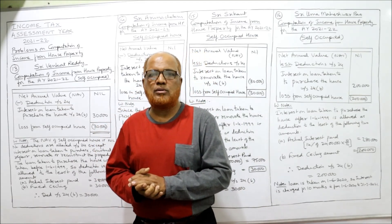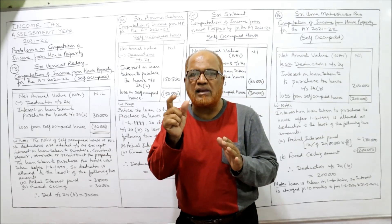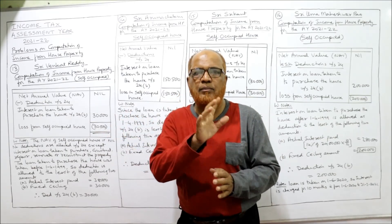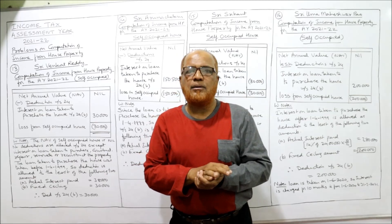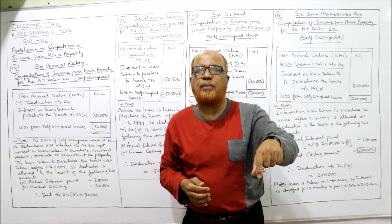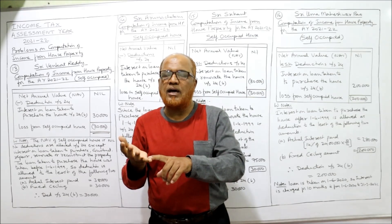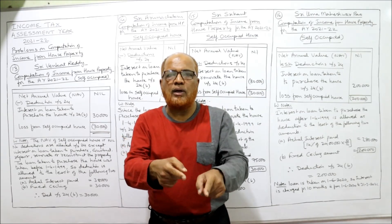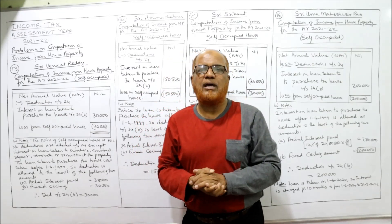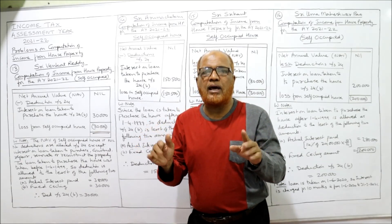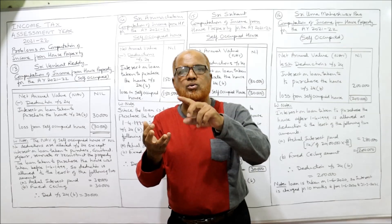This is a self-occupied house. The net annual value (NAV) of a self-occupied house will always be nil. When NAV is nil, we are not concerned about GAV or municipal taxes. So MRV is given — ignore. FRV is given — ignore. Municipal taxes given — ignore. NAV will be nil. No deductions are allowed under Section 24 except one: interest paid on loan taken to purchase, construct, repair, renovate, or reconstruct the house.